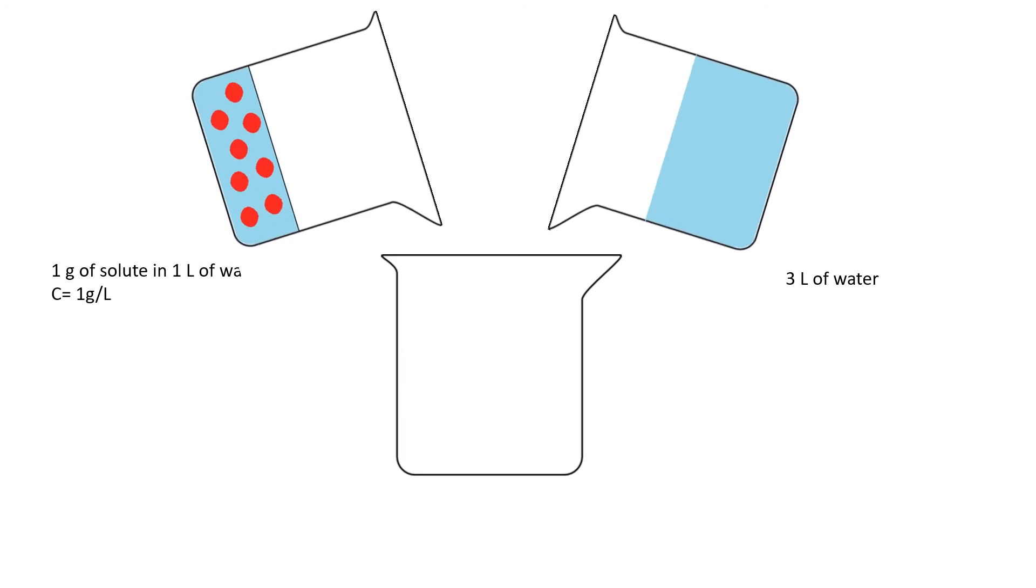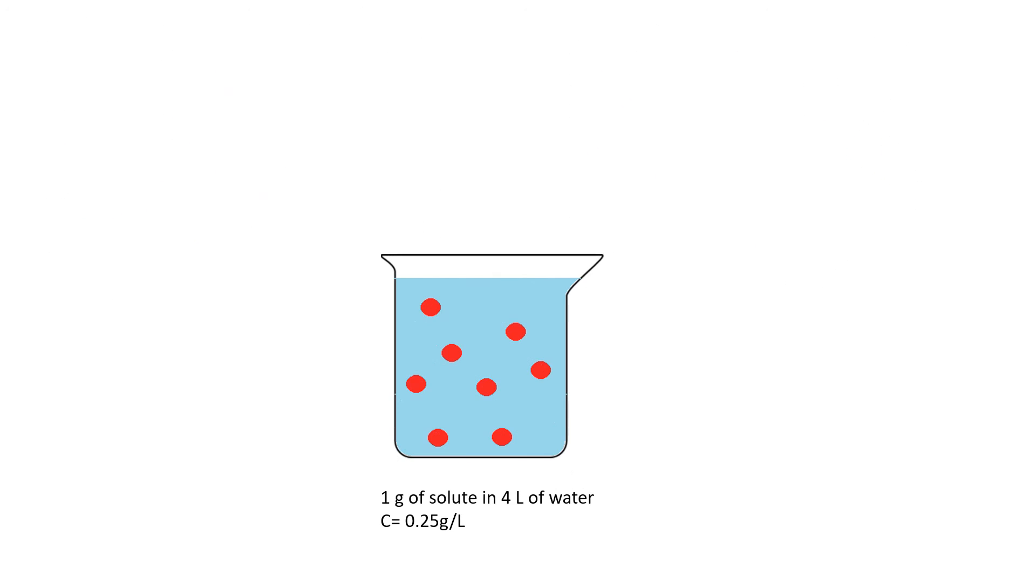So when we mix them together, we now have a total of four liters of water. So the one liter that we had originally in our one gram per liter solution and the three liters of water that we added.